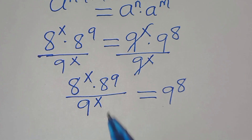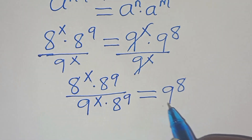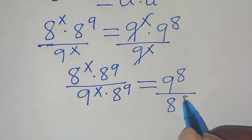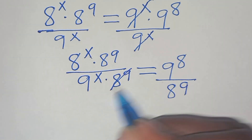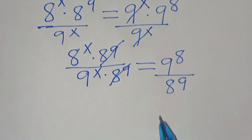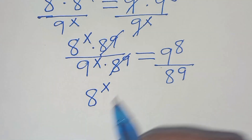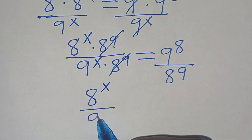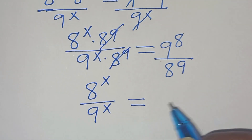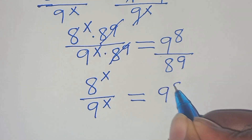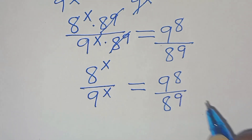Next, divide both sides by 8 to the power of 9. Simplifying 8 to the power of 9, we have 8 to the power of x divided by 9 to the power of x, equal to 9 to the power of 8 divided by 8 to the power of 9.